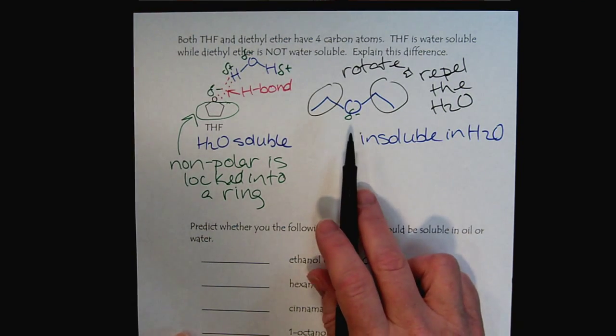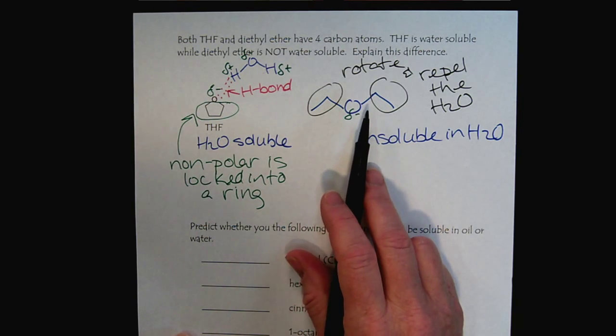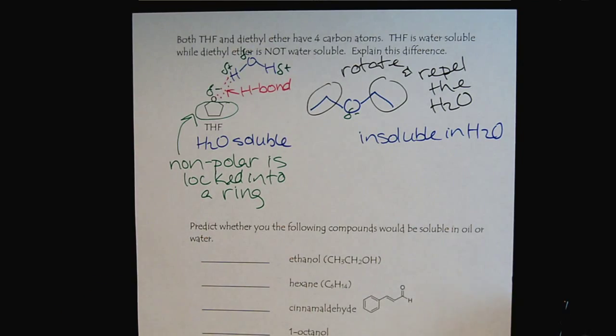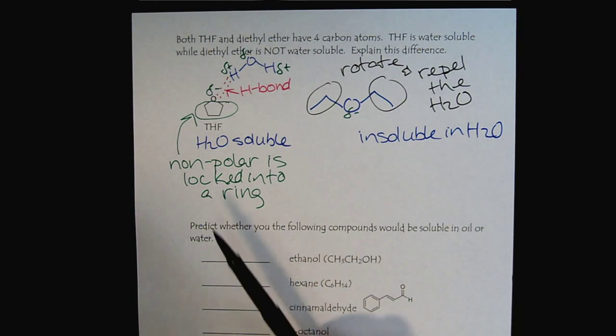The water can never get in — it feels an electrostatic attraction to the oxygen of the ether, but the arms of the ether repel it. Think of it this way: when I'm THF, the carbon chains are locked behind in the ring, so water could reach through and solubilize the oxygen. But when I'm diethyl ether, the nonpolar carbon arms are rotating and spinning, so water can't reach the oxygen because the rotation of the hydrocarbon chains repels it. This brings together our understanding of intermolecular forces with the structure of the hydrocarbon backbone.